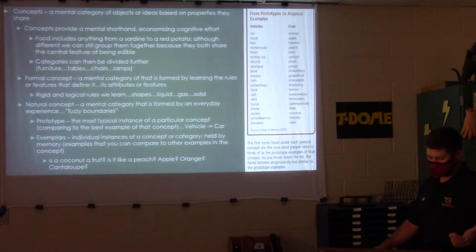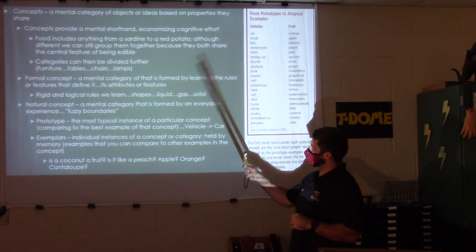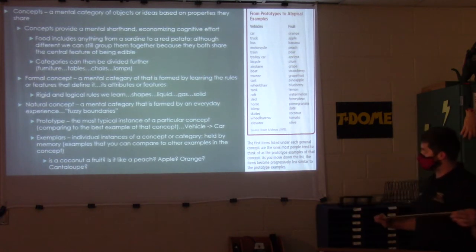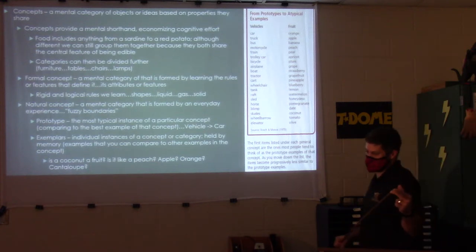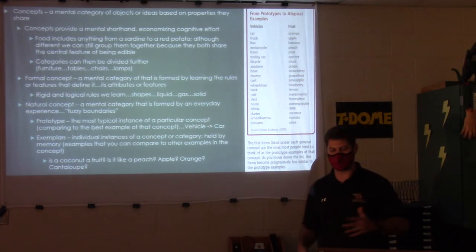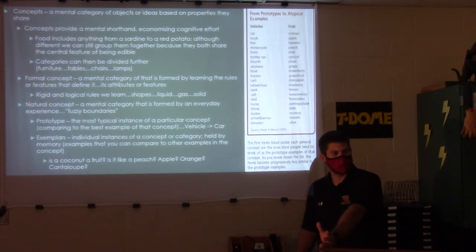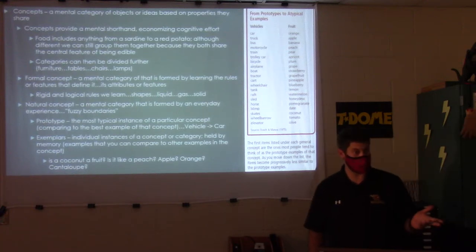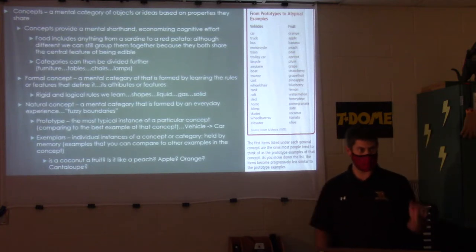Concepts are a mental category of objects or ideas based on properties they share. We build these things — concepts are also like schemas, mental lists and categories that we build in our brains from the moment we exist until the present. You start adding to them — like the list of mammals. You might see a dog, then a cat and call it a dog, and your mom corrects you. Then you see a horse and call it a big dog.